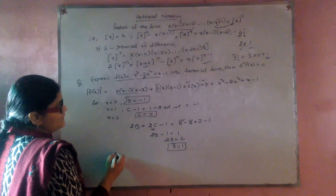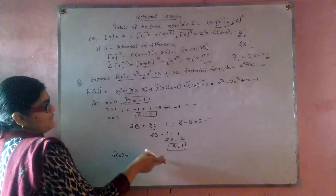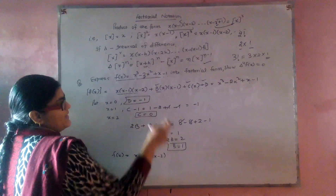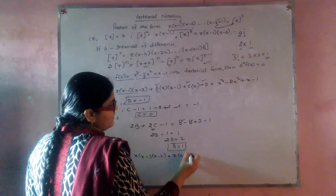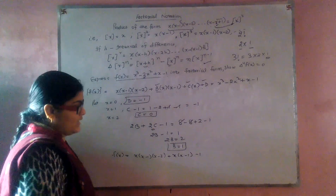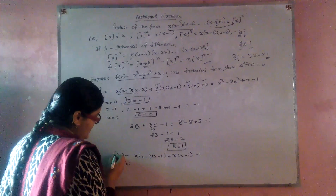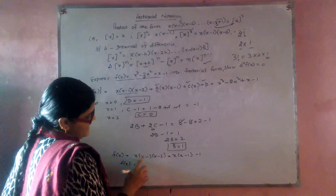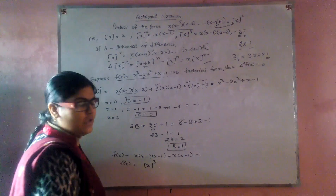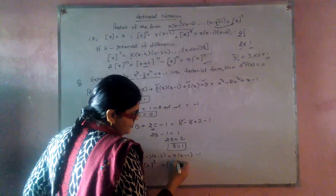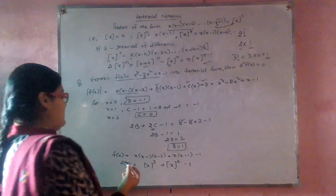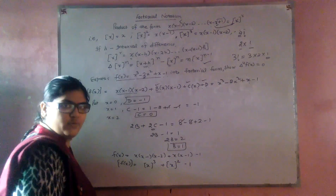Substituting all these values: f(x) becomes x(x minus 1)(x minus 2) plus 1·x(x minus 1) plus 0·x plus (minus 1). So f(x) in factorial notation becomes factorial notation of x up to 3, plus factorial notation of x up to 2, minus 1.